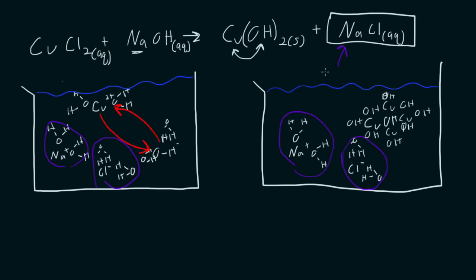So we call these spectator ions. Okay. So they're spectator ions because they don't participate. They're just watching the reaction happen. They don't actually do anything. The only part that's important here is this OH and this Cu.